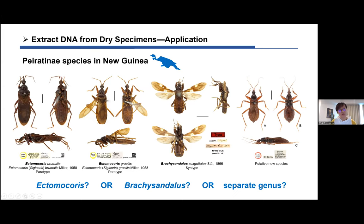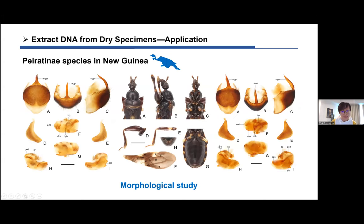Here is an application case of extracting DNA from dry specimens. When I examined species distributed in New Guinea I found several species looking quite similar in structure but assigned to different genera — two assigned to the subgenus Citychorus of Ectomocorus, one a Brachysandalus species, and one potentially a new species. I wondered if all four should belong to Ectomocorus, Brachysandalus, or a separate genus. After dissecting and morphological study, I confirmed they might be a monophyletic group, but could not determine if it should be a subgenus or separate genus, so we carried out molecular phylogenetic analysis.